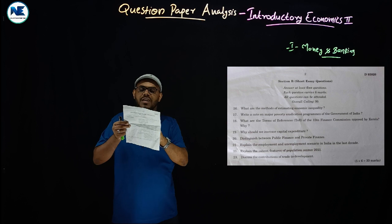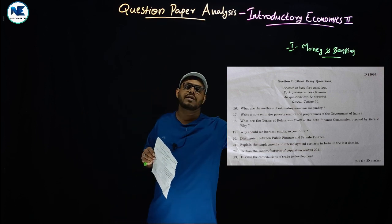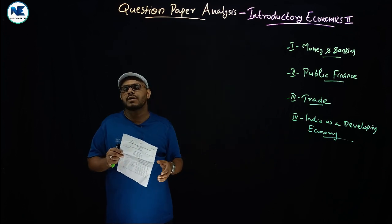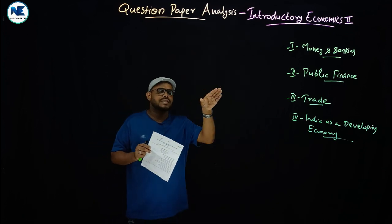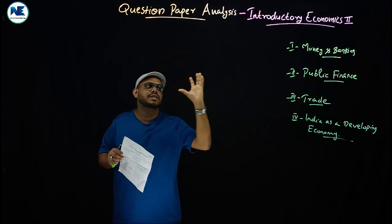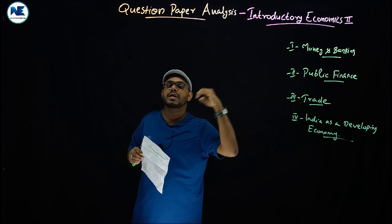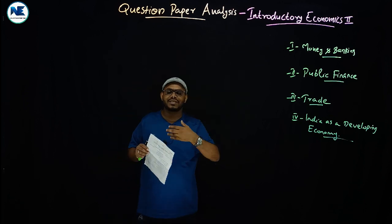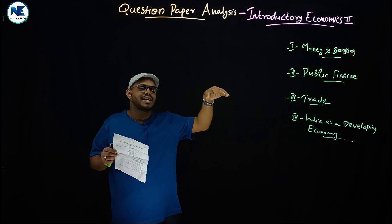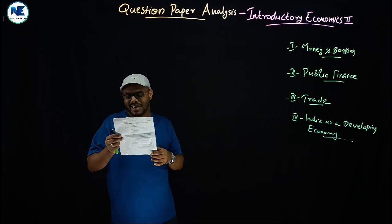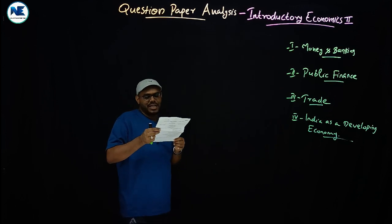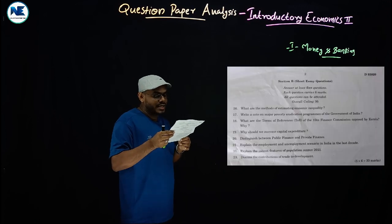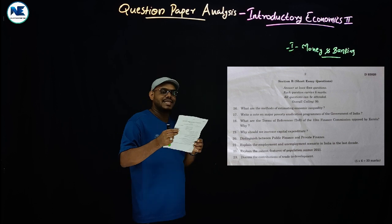The twentieth question: distinguish between public finance and private finance. Public finance, or fiscal economics, deals with the income and expenditure of the public authority. Private finance deals with the income and expenditure of private individuals. YouTube videos are available on this topic. Also study the similarities and differences between them in the Indian context over the last decade.